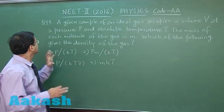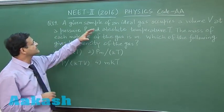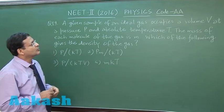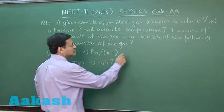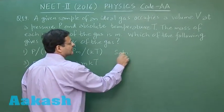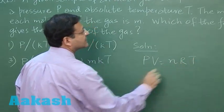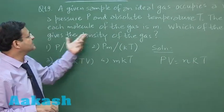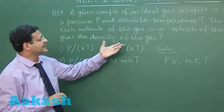Now this is question 19 based on ideal gas equation. It says that a given sample of an ideal gas occupies a volume V at a pressure P and absolute temperature T. So if you have the standard expression for ideal gas, that is PV is equal to nRT. Now the mass of each molecule of the gas is small m. So which of the following gives the density of the gas?